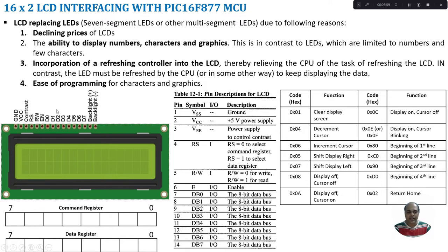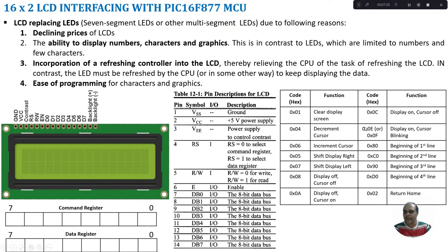As mentioned earlier, we have different commands that can be set, as shown in the table. Sending 0x01 clears the display screen. 0x04 decrements the cursor, 0x06 increments the cursor. 0x05 shifts display right, 0x07 shifts display left. 0x08 is display off with cursor off. 0x0C is display on with cursor off. 0x0E or 0x0F is display on with cursor in the blinking state.